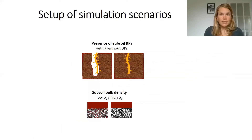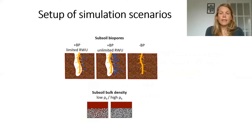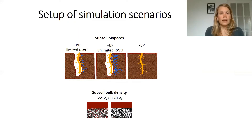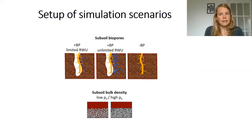We set up different simulation scenarios that take into account the different soil physical conditions. Since we wanted to evaluate the impact of biopores we did scenarios with and without biopores. For the root water uptake we took into account limited as well as unlimited root water uptake in biopores. Limited root water uptake means that if a root is located in a biopore only a part of the root surface is in contact with the biopore wall, thus a root will take up less water. In the second case of unlimited root water uptake we assumed that a root located in a biopore can take up just as much water as it would in bulk soil. Additionally we took into account two scenarios of subsoil bulk density, either low or high.